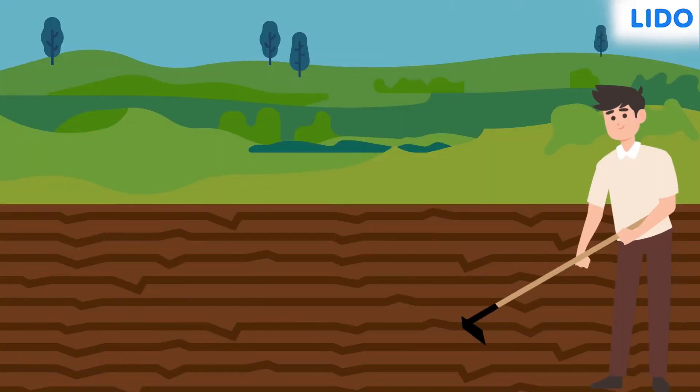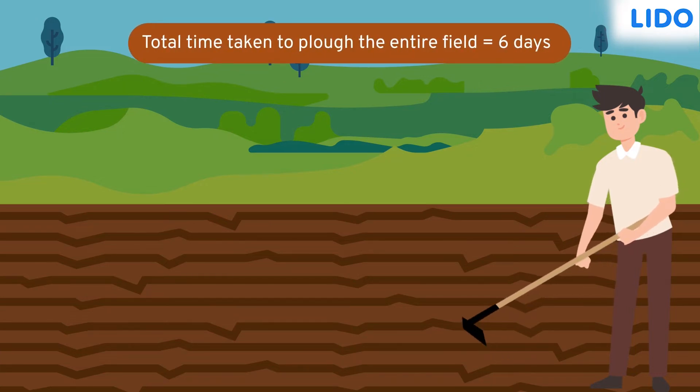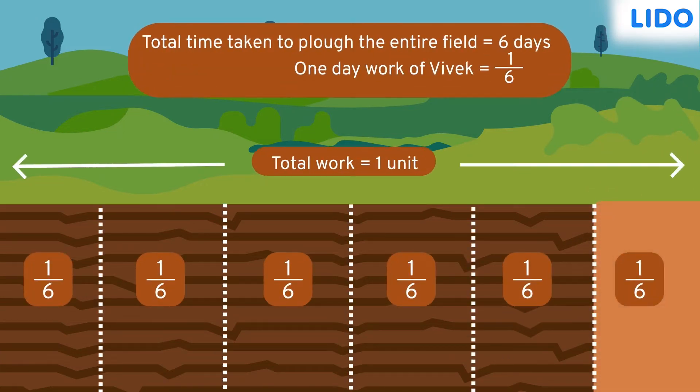This is Rahul's cousin Vivek who also has a piece of land in the same area. Vivek takes six days to plough his field, which means he does one sixth of the work every day.